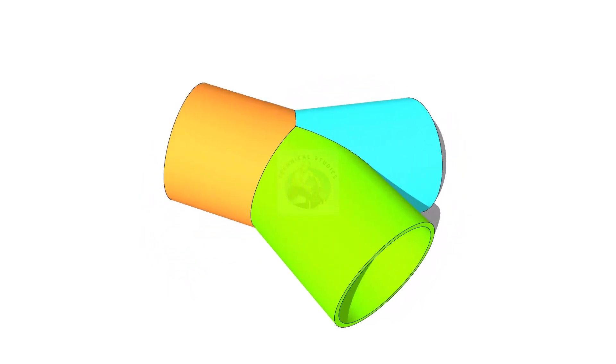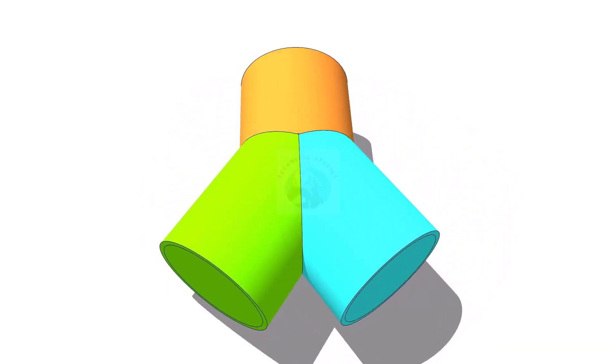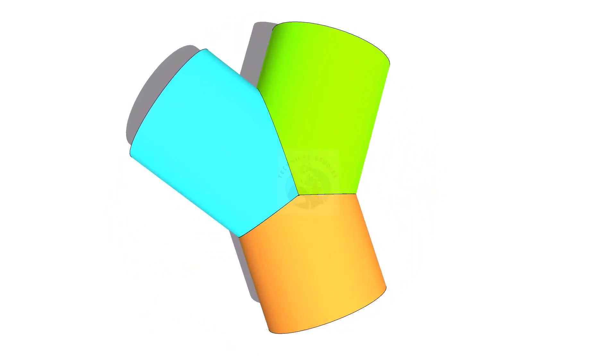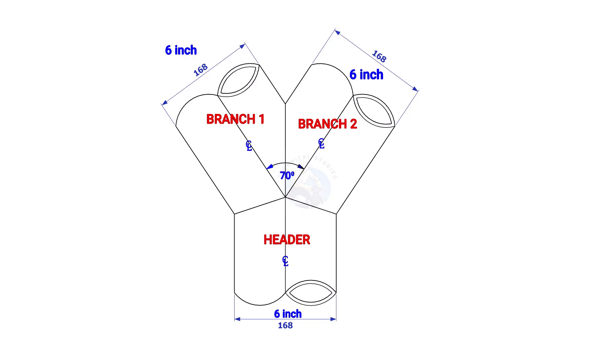Welcome to the technical studies. In this video we will learn how to lay out a Y branch. The size of the Y branch in this example is 6 inches and the including angle is 70 degrees.